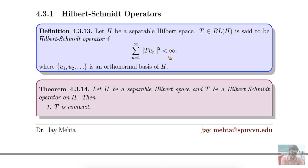Examples we have seen include the zero operator, and on a finite-dimensional Hilbert space any bounded linear map is Hilbert-Schmidt. Also on a finite-dimensional Hilbert space any linear map is compact. That leads us to ask: is there any relation between Hilbert-Schmidt operators and compact operators?